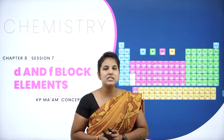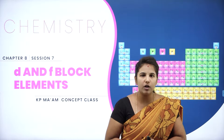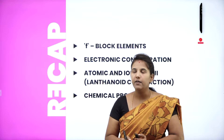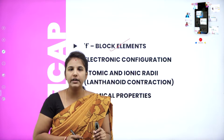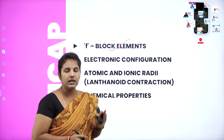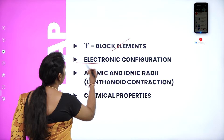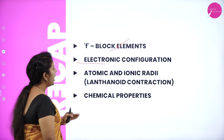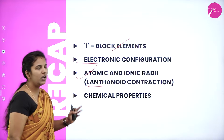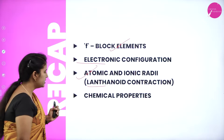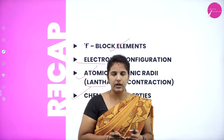My dear students, in our last discussion we were dealing with the unit called D and F block elements. Under that, we discussed about the F block elements, specifically the lanthanide series, including their electronic configurations, atomic and ionic radii — also known as lanthanide contraction.